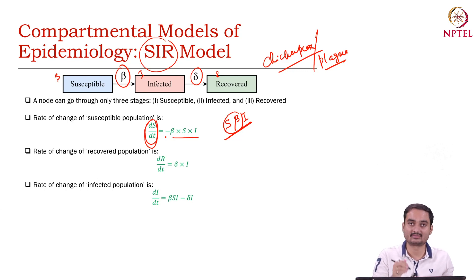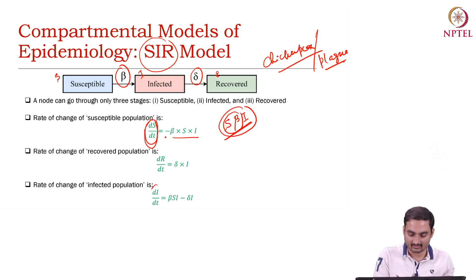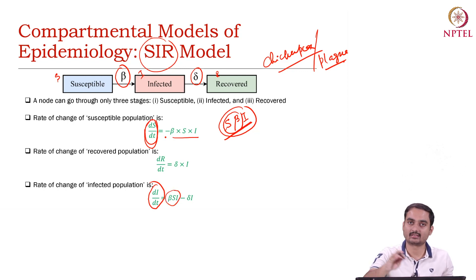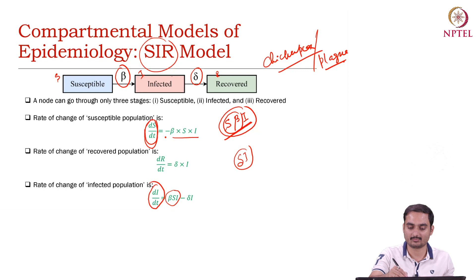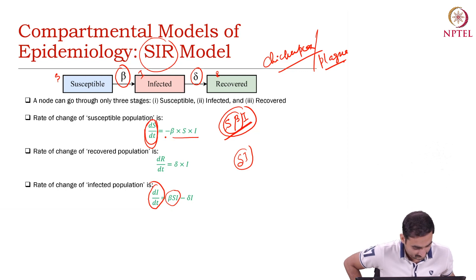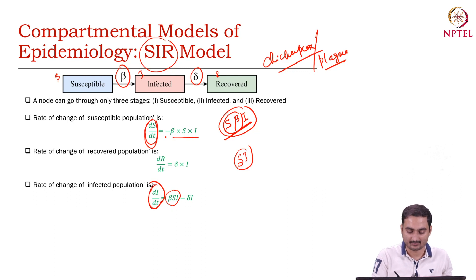What is the rate of change of infected users? The same number of users will be newly infected. So the rate of change of infected users includes this term, but there are also some users which would get recovered. Each infected user would get recovered with probability delta, and there are I such infected users. So this many users will move from infected state to the recovered state. The rate of change of infected population is this minus this.